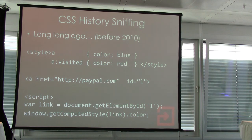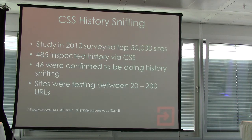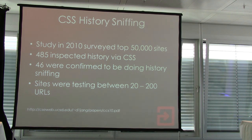The browser would tell you what color the link is — if it's red, it's visited. It's really, really simple. The website could do this not just for one link but for many, many thousands of links very quickly, because there are no actual network requests going on. This was obviously quite a big problem, and it wasn't just theoretical. In 2010, someone did a study looking at the top 50,000 sites and found that a whole bunch of them were actually doing this history sniffing attack and sending the results back to a server, invading people's privacy.